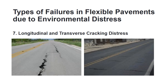The seventh environmental distress type is longitudinal and transverse cracking. This distress can be considered as either structural or environmental. Longitudinal cracks are formed parallel to the pavement alignment or centerline of the pavement.